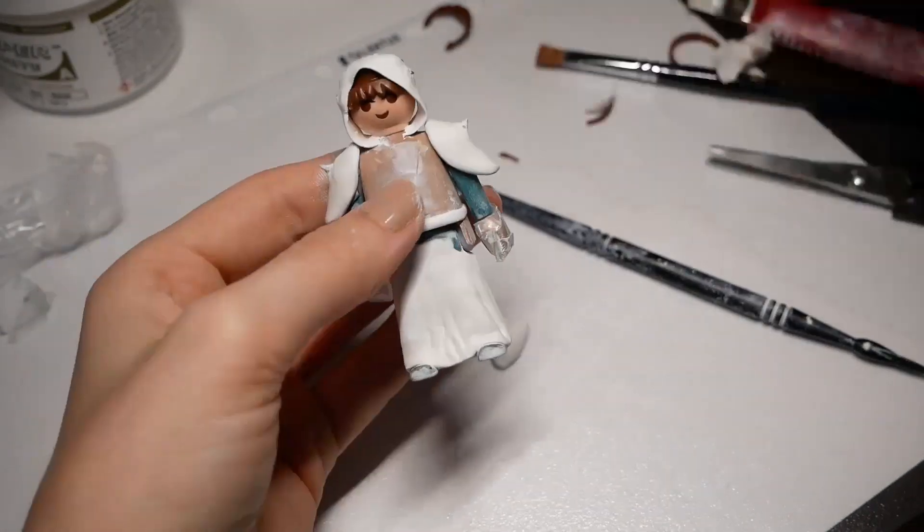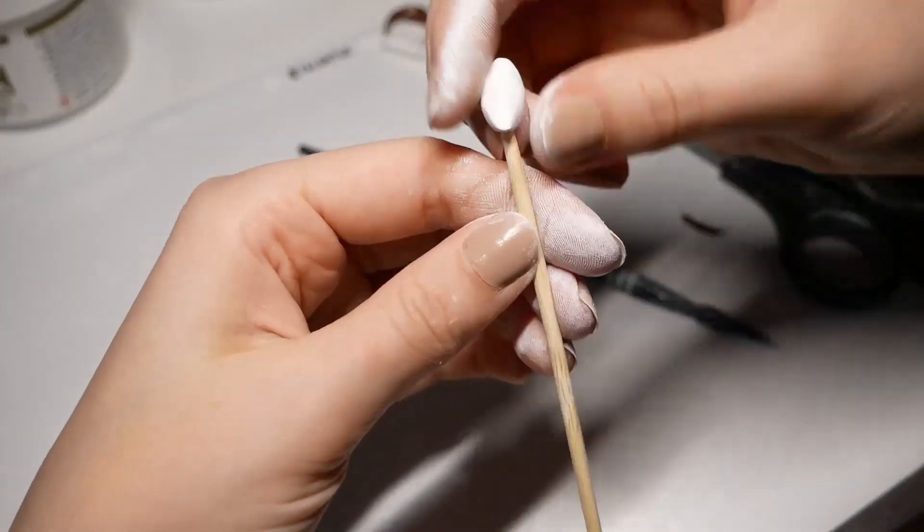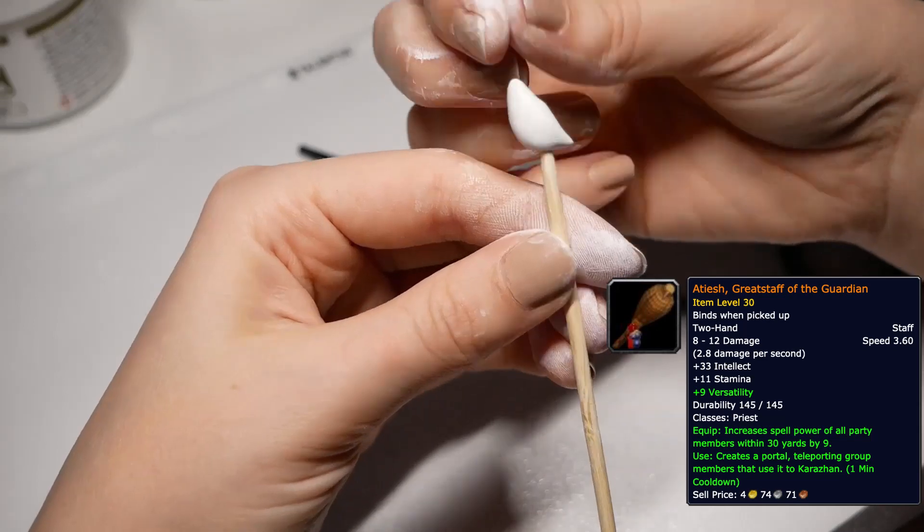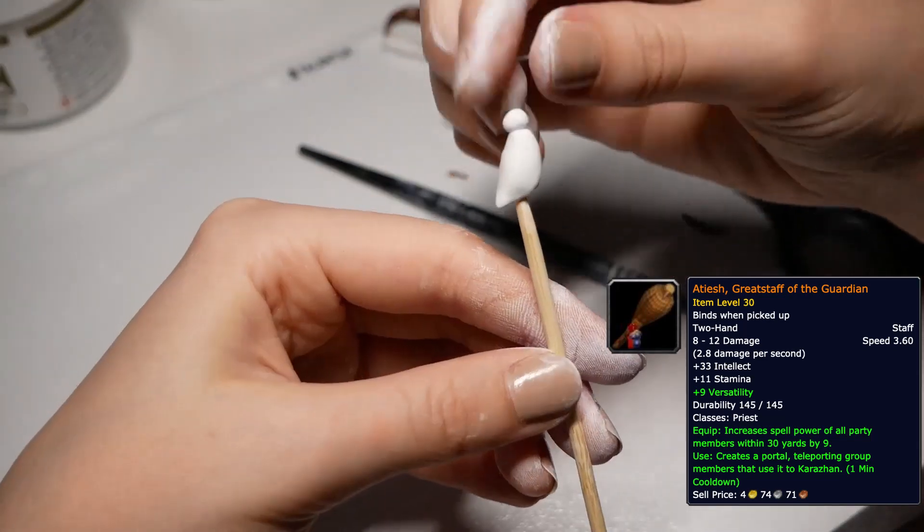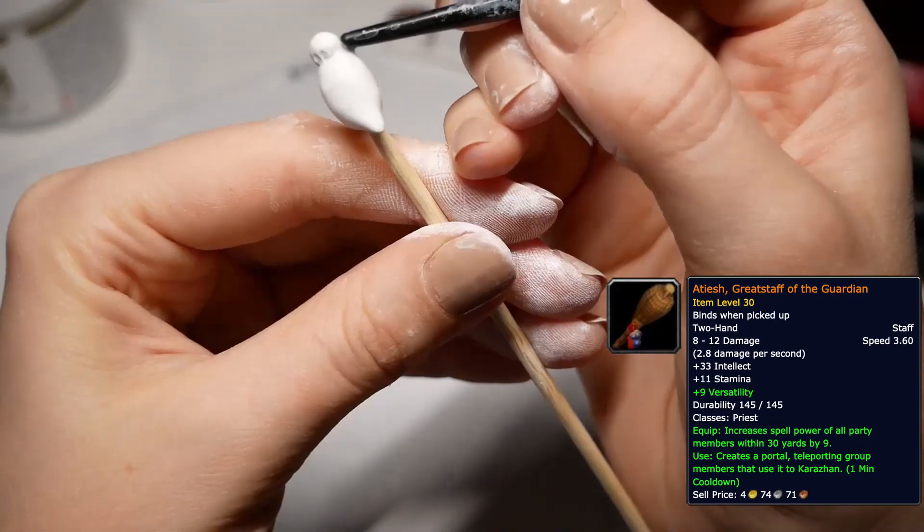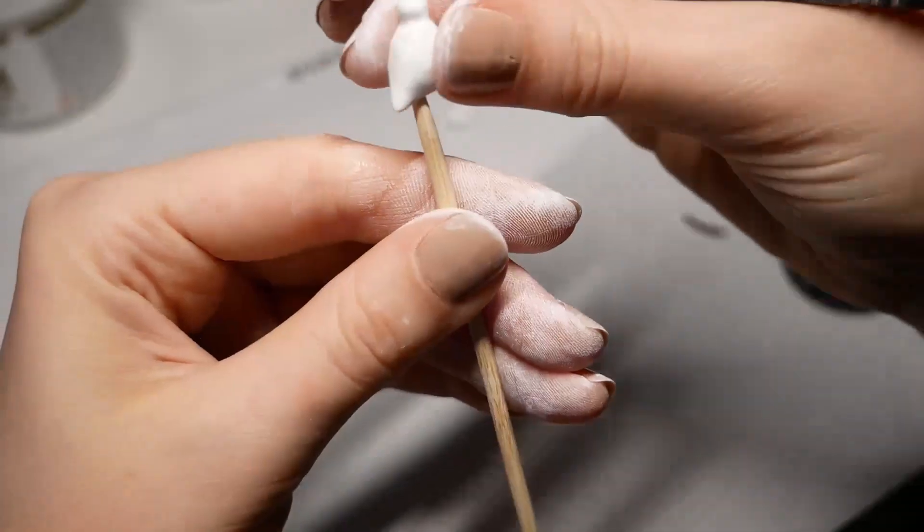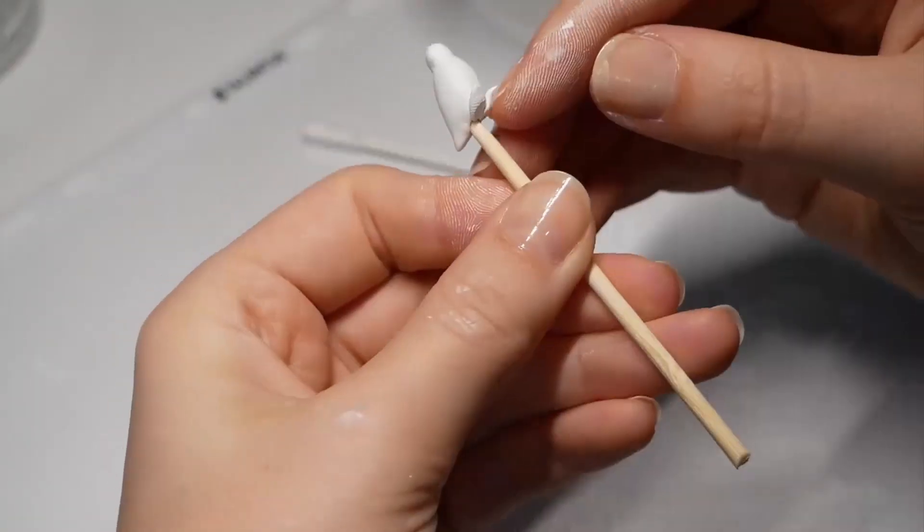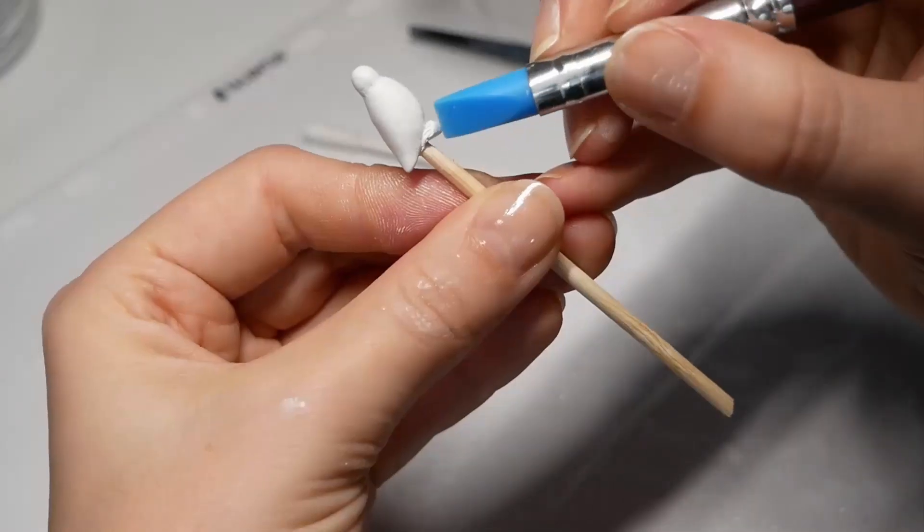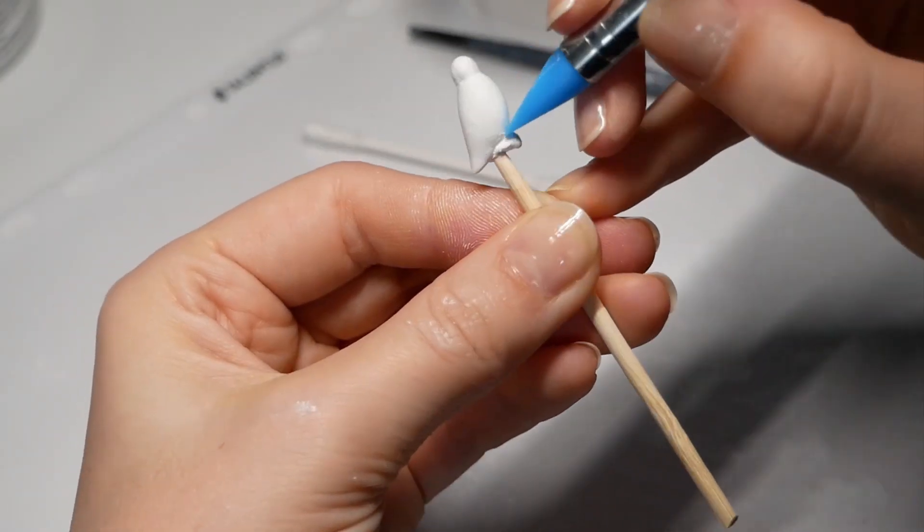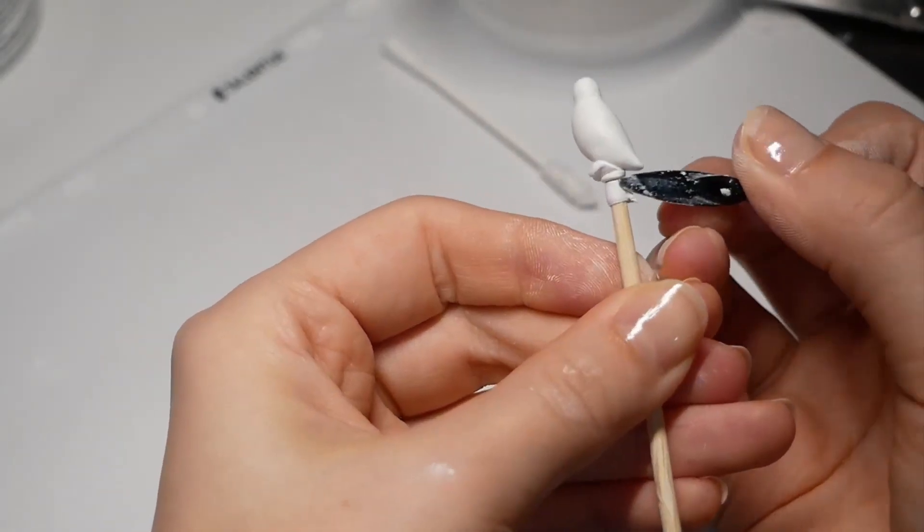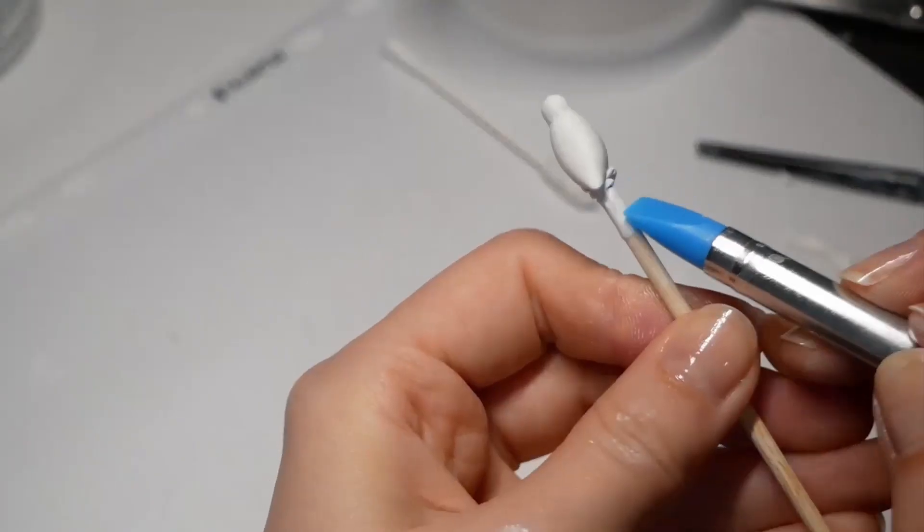Meanwhile, I started making the staff of the guardian for him. For this, I customized a barbecue stick. To make the bird, I just needed to make a drop for the body and a ball for the head. When the body dried, I could add the feet and some more details to the staff. I don't really know how to call these things here, but the video makes it clear.